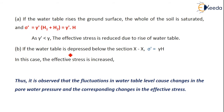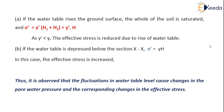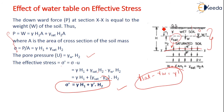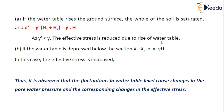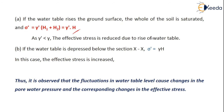If the water table rises to the ground surface, the whole soil is saturated, and sigma' = gamma'·(h1 + h2) = gamma'·H. Since gamma' is less than gamma, the effective stress is reduced due to the rise in the water table.